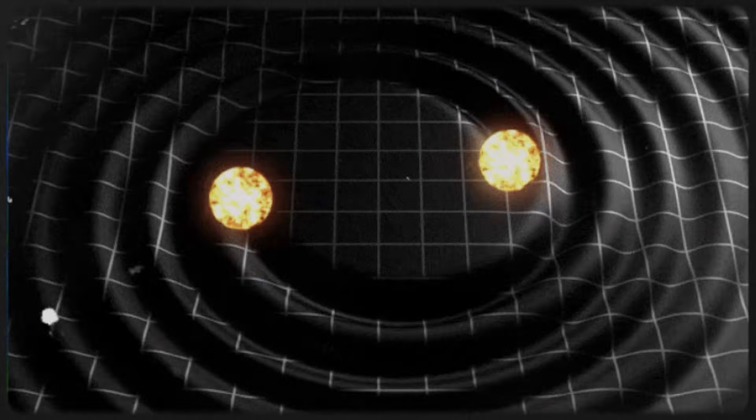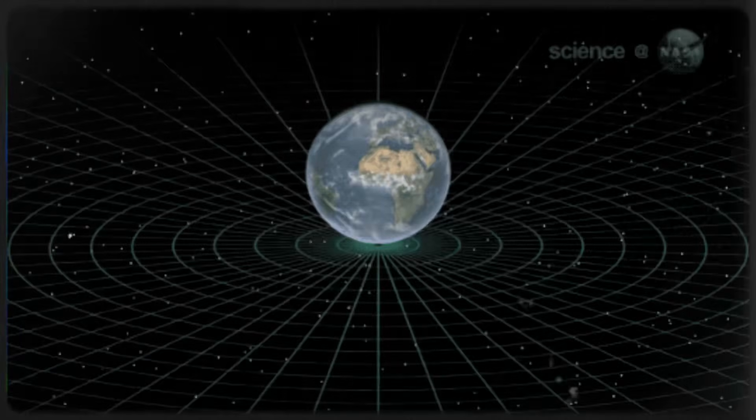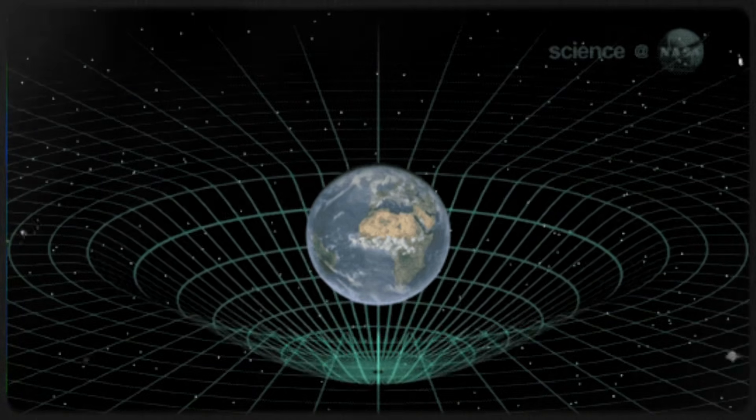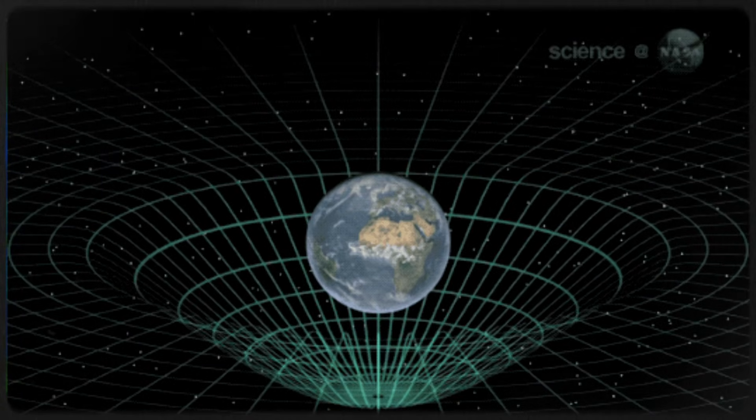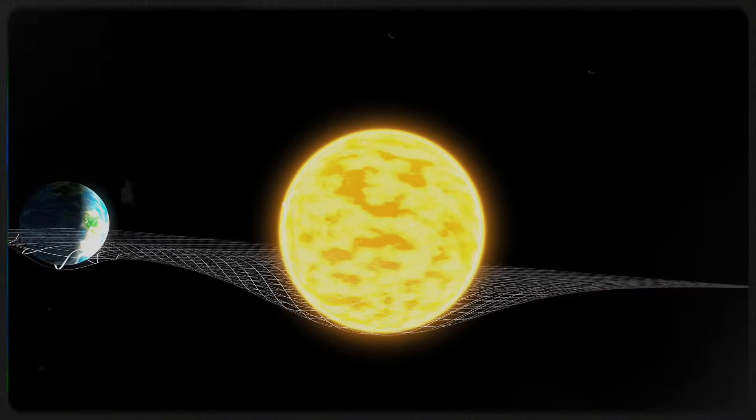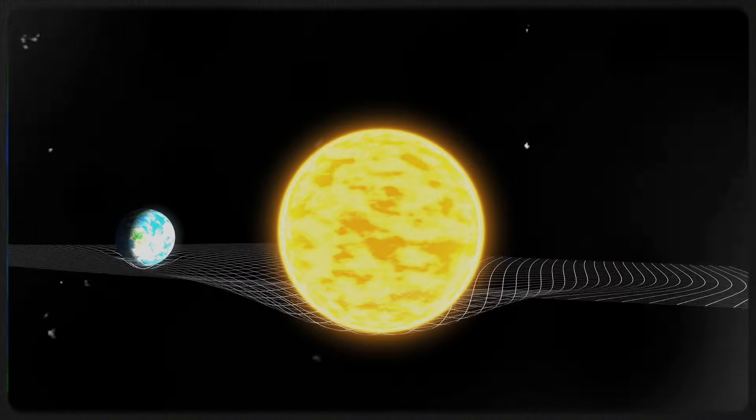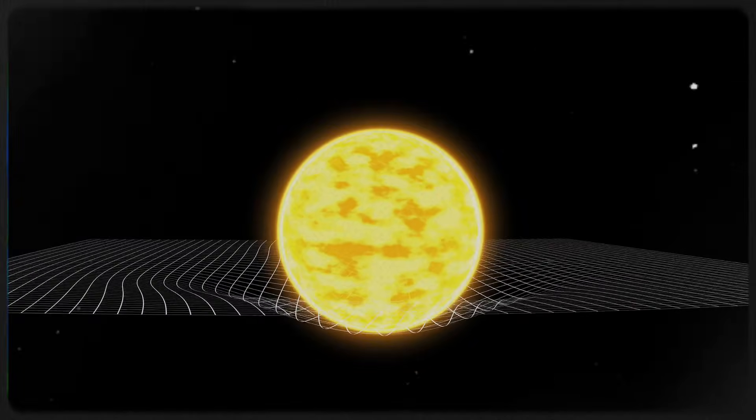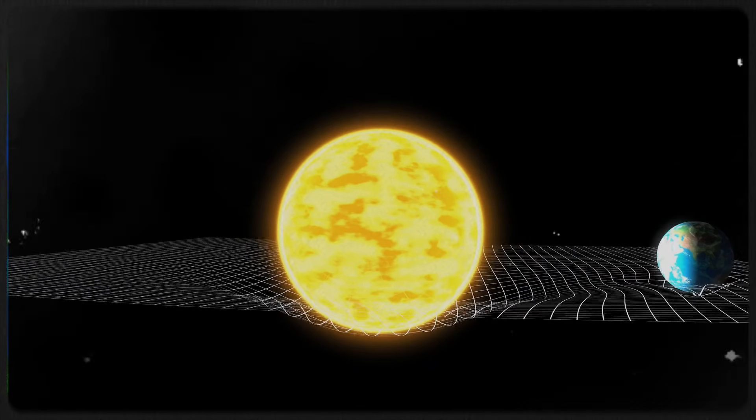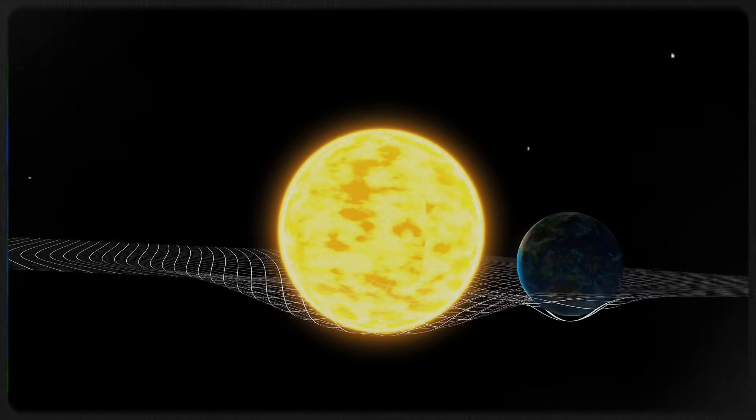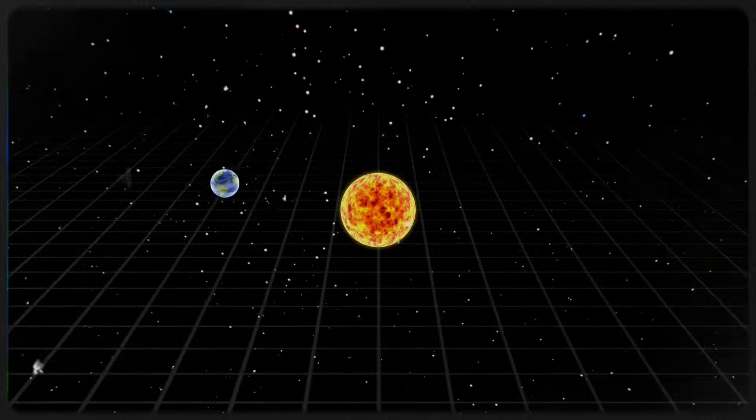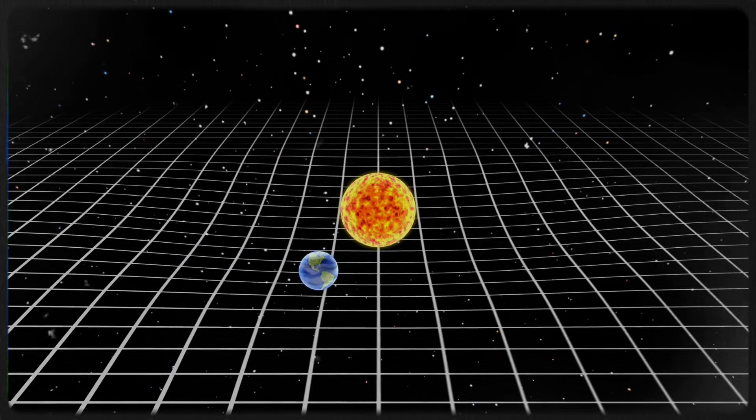Traditionally, gravity is understood as the bending of spacetime by mass. Massive objects curve the fabric of spacetime, and other objects follow these curves, which we experience as gravitational attraction. This model explains a lot from how planets orbit to how light bends around massive objects. But some observations, like the unusual rotational speeds of stars and galaxies, suggest there's more going on. These behaviors can't be explained by visible mass alone, leading to the dark matter hypothesis.